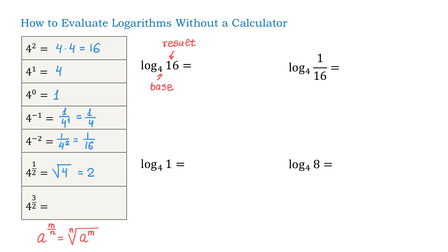Then, 4 to the power of 3 over 2, we can write it as square root of 4 to the third power. Now, 4 to the third power is 64, and square root of 64 is 8. Once we have some practice with the exponents, let's evaluate logarithms.